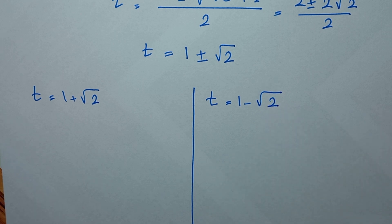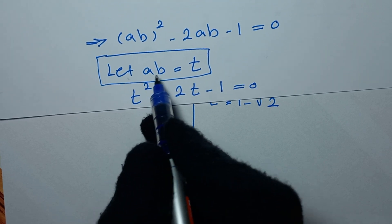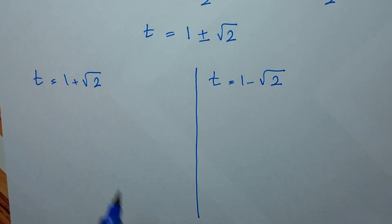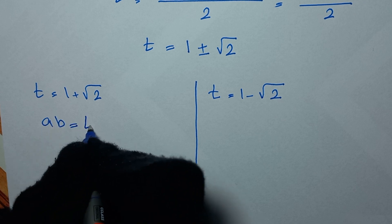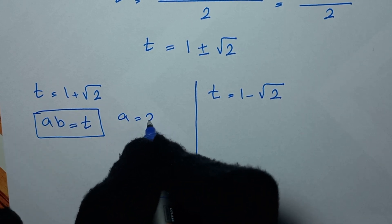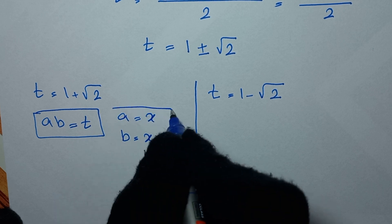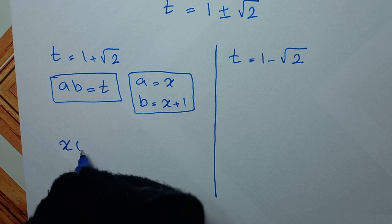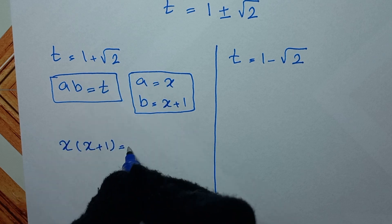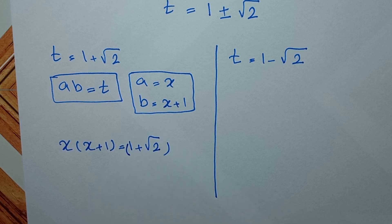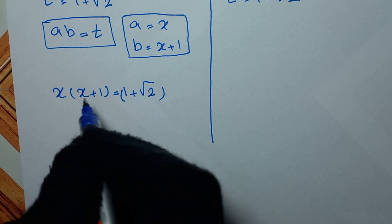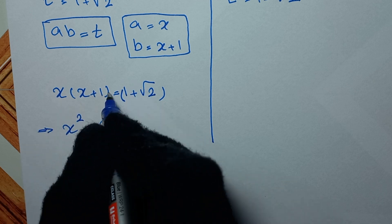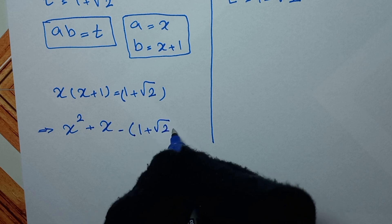Since ab = t, and a = x and b = x+1, we have x(x+1) = t. For the first case t = 1 + √2: x(x+1) = 1 + √2, so x² + x = 1 + √2. Taking to one side: x² + x - (1 + √2) = 0.